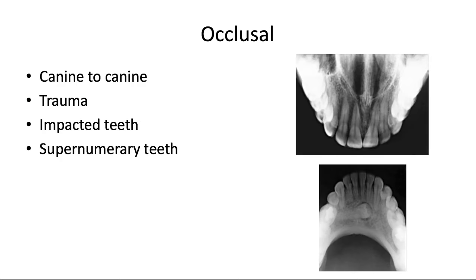Next we have occlusal films. These are taken with the receptor lying flat on the occlusal plane, and they should capture from canine to canine. They provide a different angulation useful for identifying an alveolar bone fracture, an impacted tooth, a missing tooth, or a supernumerary tooth. In this mandibular occlusal film, we can see a premolar that is completely impacted and crossing the midline. Occlusals are also generally easier for pediatric patients, who tolerate them better because the receptor is less likely to pinch the floor of the mouth.